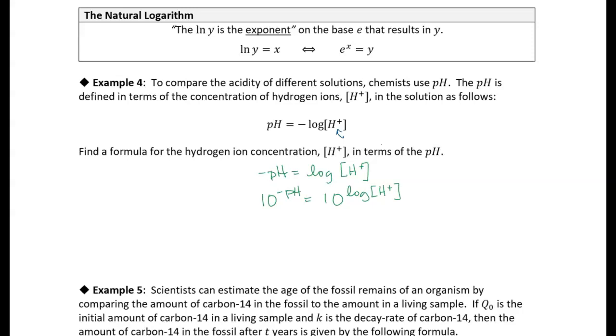So that allows me to get rid of the log and solve for the hydrogen ion concentration, because again, these are inverses of each other. The exponent of 10 is the inverse of the log. So what I end up with on this side is just the hydrogen ion concentration, and then over here I get 10 to the minus pH.